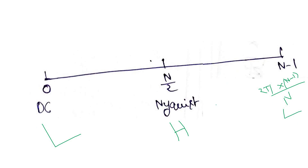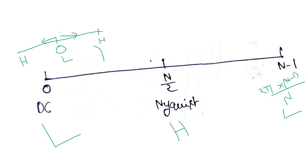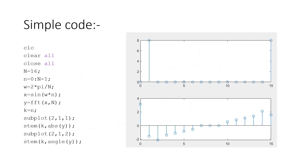We get a low-high-low pattern in the DFT response, but in the continuous domain we are used to seeing high frequency on both sides and DC or zero frequency in the middle — it is the reverse of what we get in the DFT. We are comfortable with a representation where frequency increases on both sides of zero, and we want to achieve that from our DFT output.